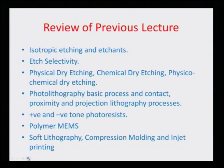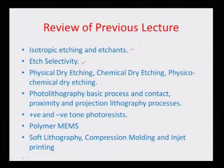We talked about various etchants and isotropic or homogeneous etching techniques, etch selectivity, and selective layers. We also briefly talked about physical dry etching, chemical dry etching, and physicochemical dry etching, where use of plasmas would enhance the directionality and anisotropicity of the etching process. We also described photolithography — the basic process of mask aligning with a wafer coated with a photoresist — and different types of lithography like contact, proximity, and projection lithography.